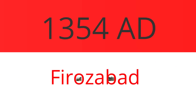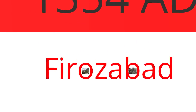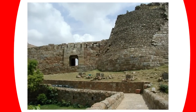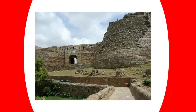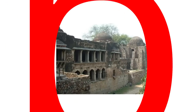In 1354, Feroz Shah started building his fortified palace complex beside the river — Feroz Shah Kotla — while the city he developed around it was called Ferozabad. He also constructed Hauz Khas Madrasa.